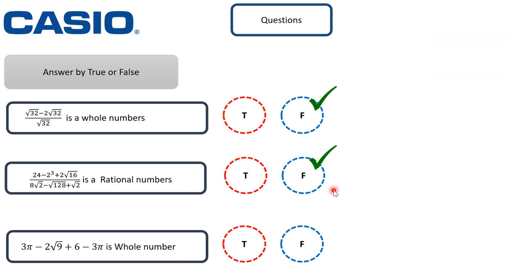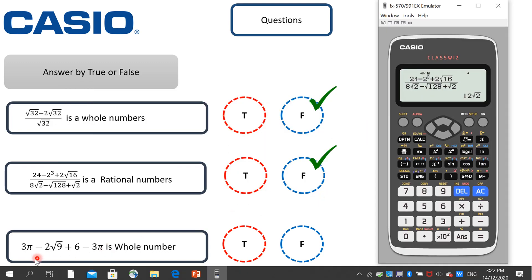The third example: we have 3π minus 2 radical 9 plus 6 minus 3π. Input the expression into the calculator: press 3, then shift pi, minus 2, square root of 9, move the cursor to the right, plus 6, minus 3. To enter pi, activate it using the shift key — press shift, then times 10 power x, and it will input pi. Click equal. The answer is zero. Zero is a whole number, so the answer is true.